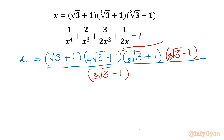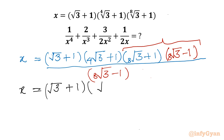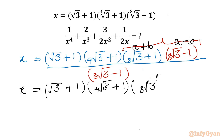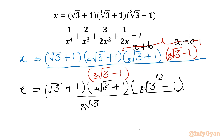Now I will club these two brackets. I will write x is equal to (root 3 + 1) times (4th root 3 + 1). Then it is (a + b)(a − b), so the difference of two squares identity will come into the picture — it is a² − b². So I will write (8th root 3)² minus 1, all over denominator (8th root 3 − 1).